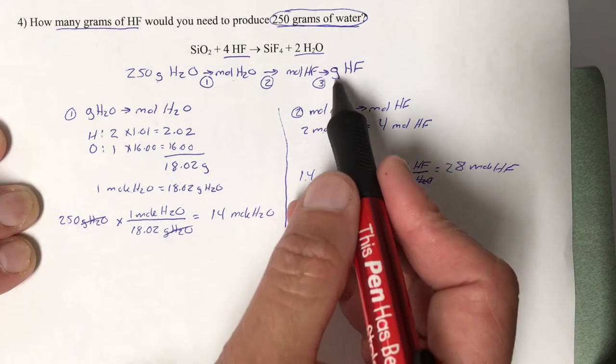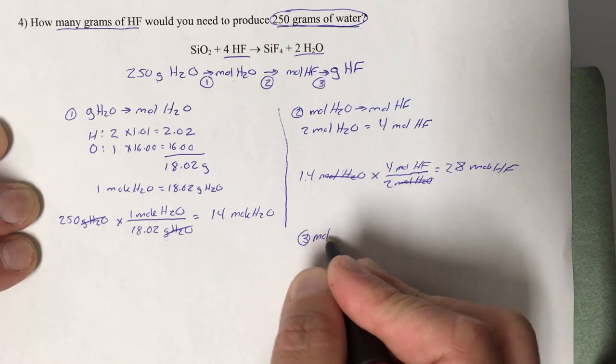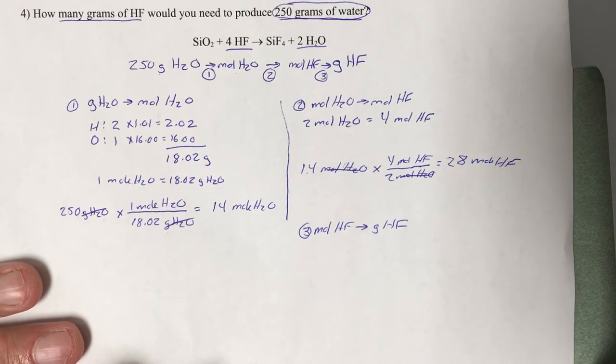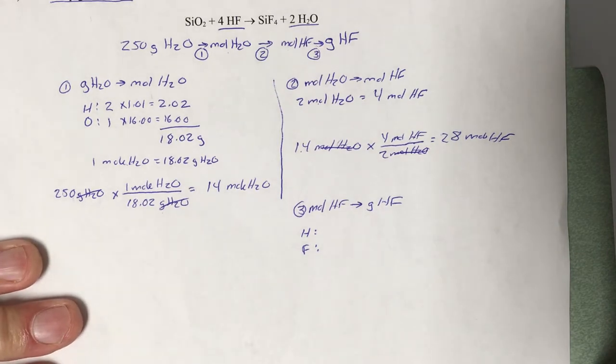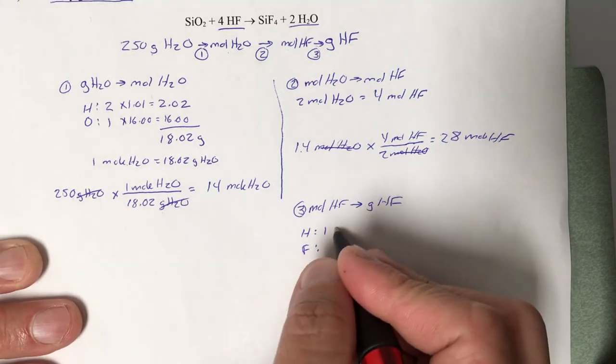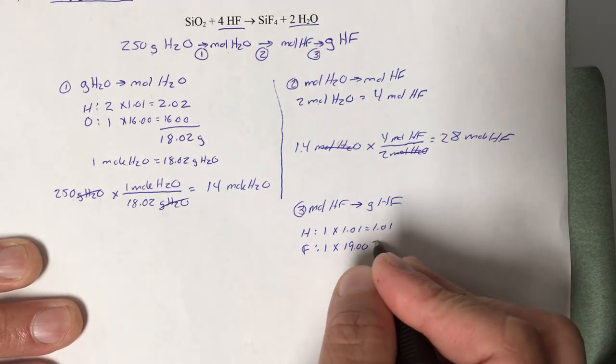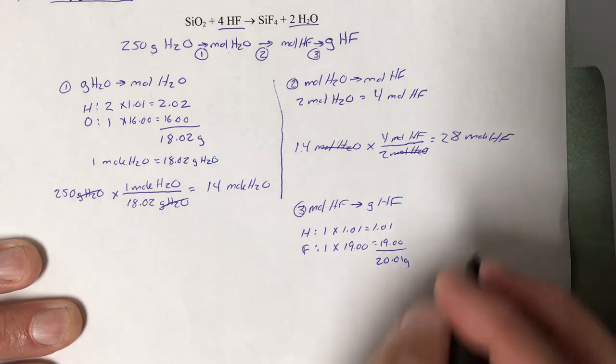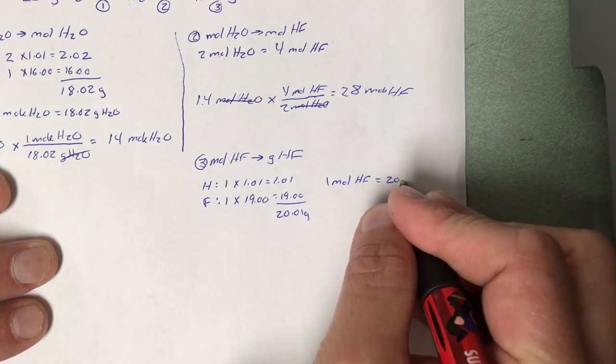Now we are ready to wrap this thing up. We want grams of hydrogen fluoride, we have moles of hydrogen fluoride. We have what we need to do that final conversion. On to step 3: moles of hydrogen fluoride to grams. Whenever we're doing a mole mass conversion, we need to have a formula mass. There's hydrogen and fluorine in hydrogen fluoride. There's no subscript on the hydrogen, so that's 1 times 1.01. There is no subscript on the fluorine, so that's times 1, and 19.00 is its mass from the periodic table. Add those up: 20.01 grams. So 1 mole of hydrogen fluoride equals 20.01 grams of it.